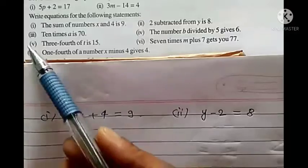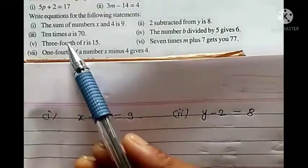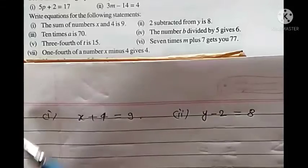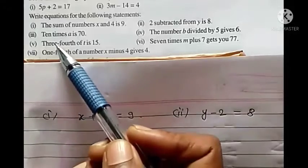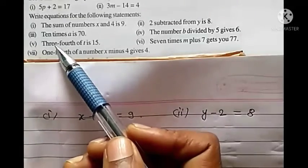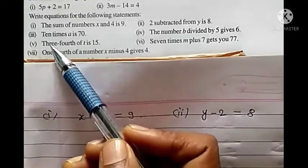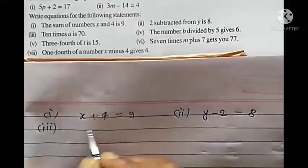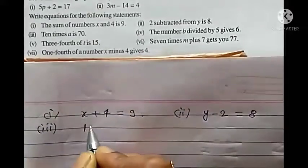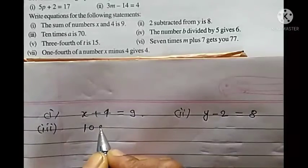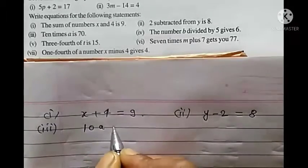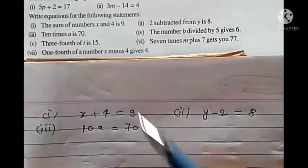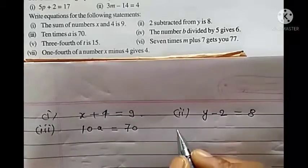Third: 10 times a is 70. Times means multiply, so 10 times a means 10 multiplied by a, which is 10a. So the equation is: 10a equals to 70.